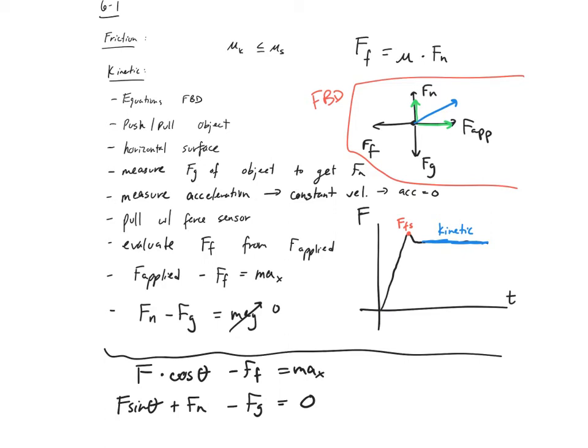M-A-Y is zero here — I'm setting it equal to zero in the Y direction. F sine theta is helping pull up, the normal force is also pulling up, and the weight is pulling down. For this same experiment to get static friction, what would we do? Have the object still and measure until the point of maximum force — measure and pull until it starts to move, then find the maximum value from your graph.